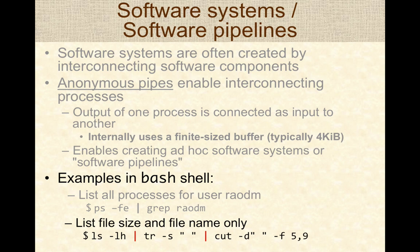Similarly, in this example, notice that there are three processes connected together to form a software pipeline. The output of the ls command is piped to the tr command, which squeezes out multiple or consecutive blank spaces and replaces them with a single one. The output of tr is then piped to the cut command to print certain columns of that output. So three processes are used to construct a software pipeline, and similar strategies can be used to connect different programs to construct ad-hoc software pipelines.